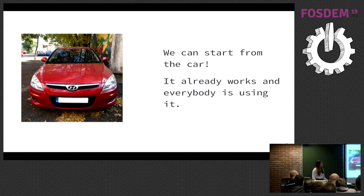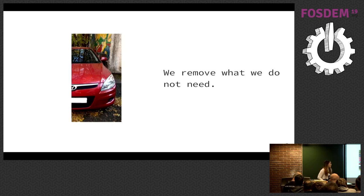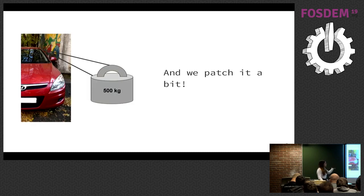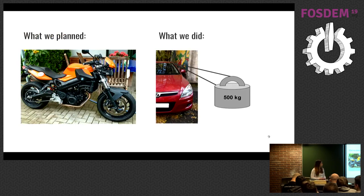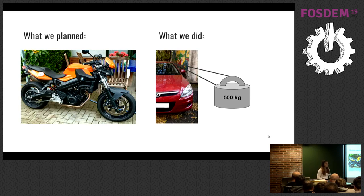We can use a car. Everybody is using the car, we know it's great, and people have used it in other projects. So it must be perfect for our use case. But the car is too complex, so we start removing components we don't need. We soon face a serious problem — the motorcycle will fall down, so we have to add some weight to balance it, which means we patch it a bit. At the end of the project, we compare what we wanted to build with what we actually built, and we're not really satisfied with the result. Even though the car was super great, our motorcycle is not ideal.